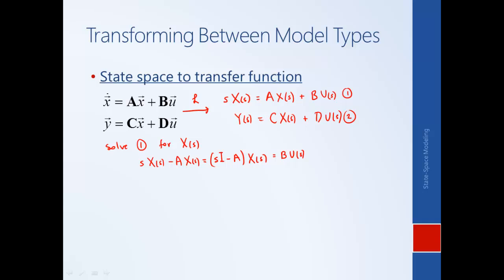We now need to finish solving for x(s). If this were a scalar equation we would simply divide through by the factor, but since this is a matrix we can't just divide — we need to multiply by the inverse of this matrix. We want to cancel out the quantity (sI − A), so we multiply on the left by its inverse. We have to do that on both sides. The product of a matrix and its inverse is the identity matrix, so they cancel out, leaving just x(s). This gives us an expression for x(s).